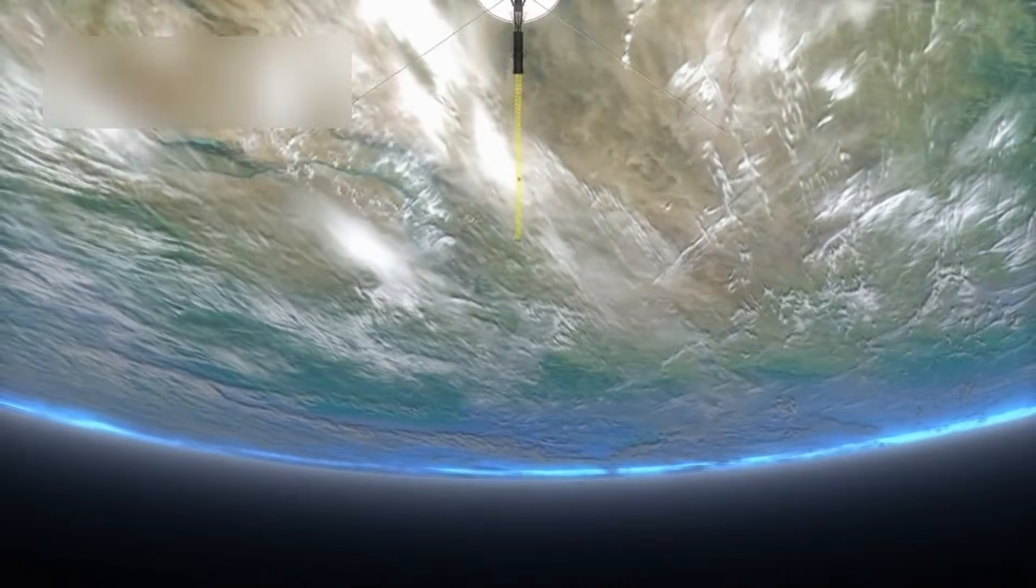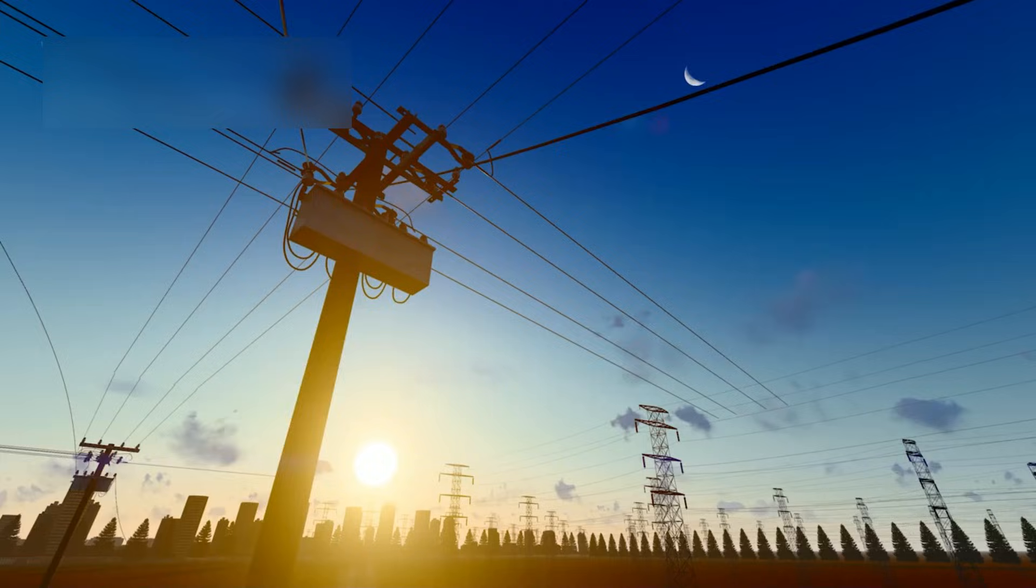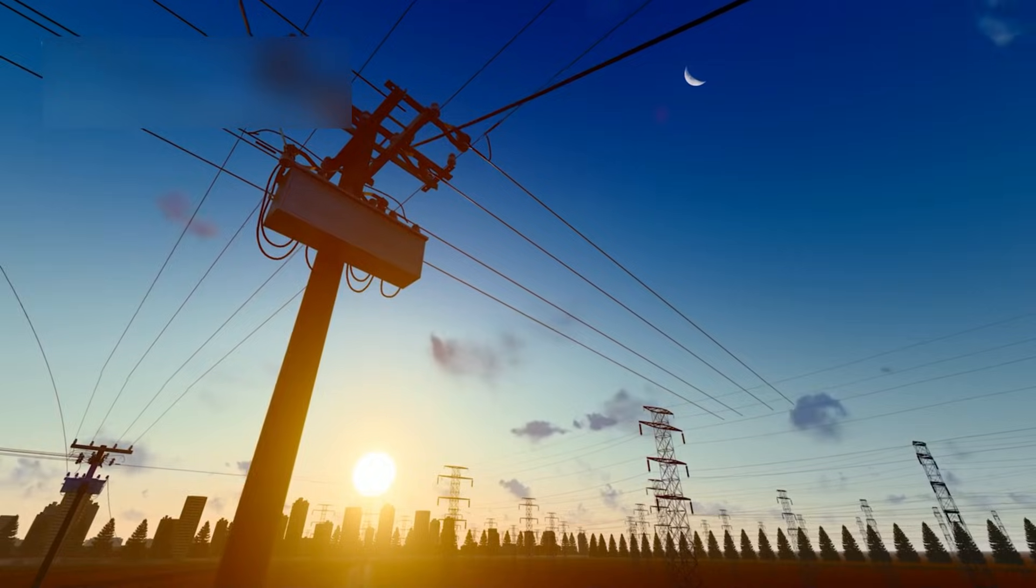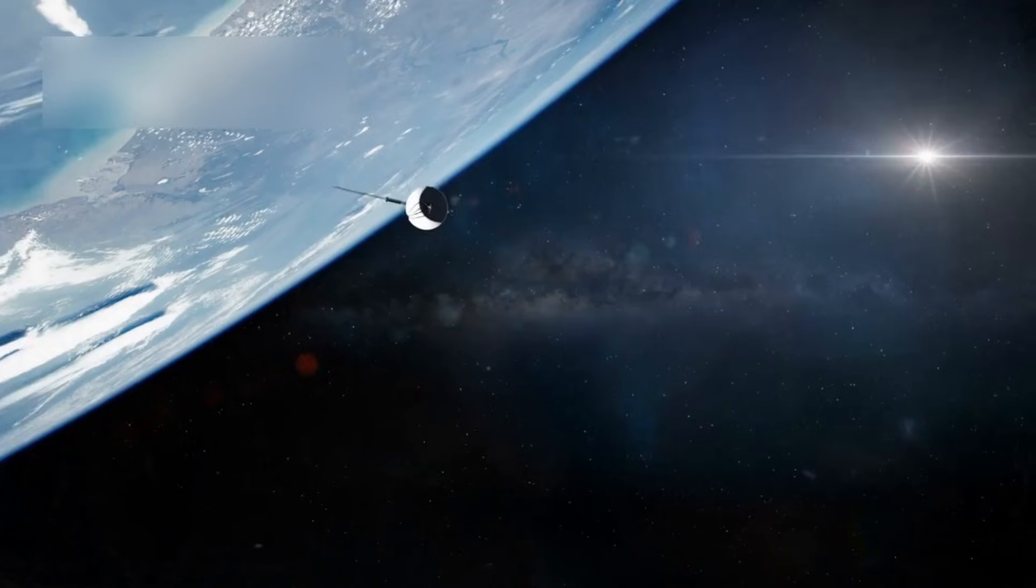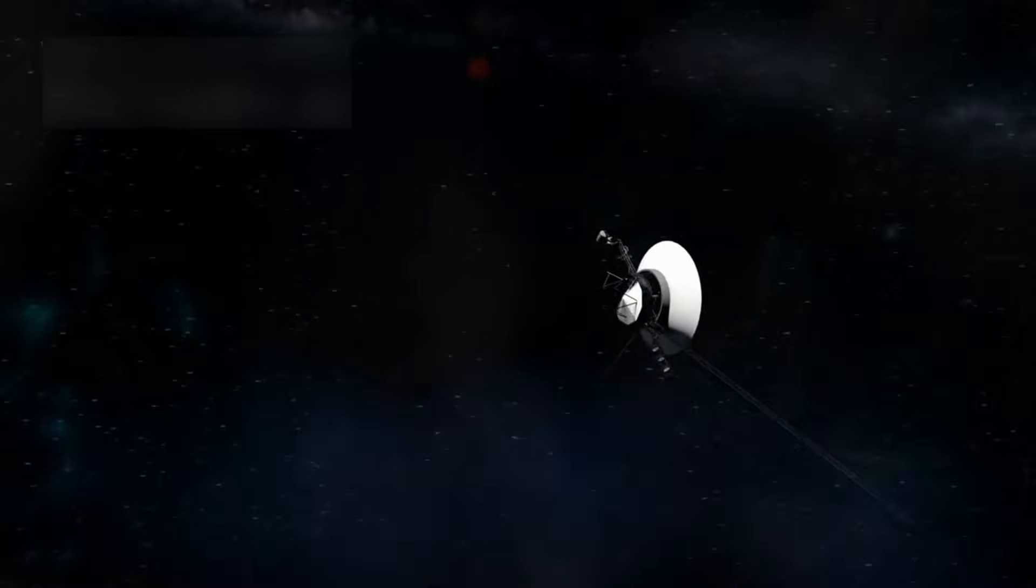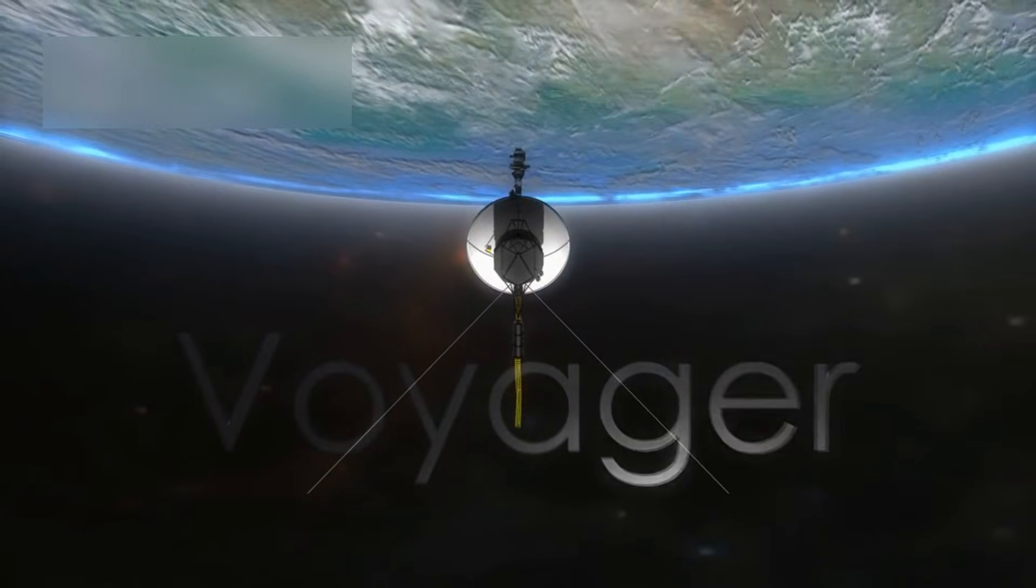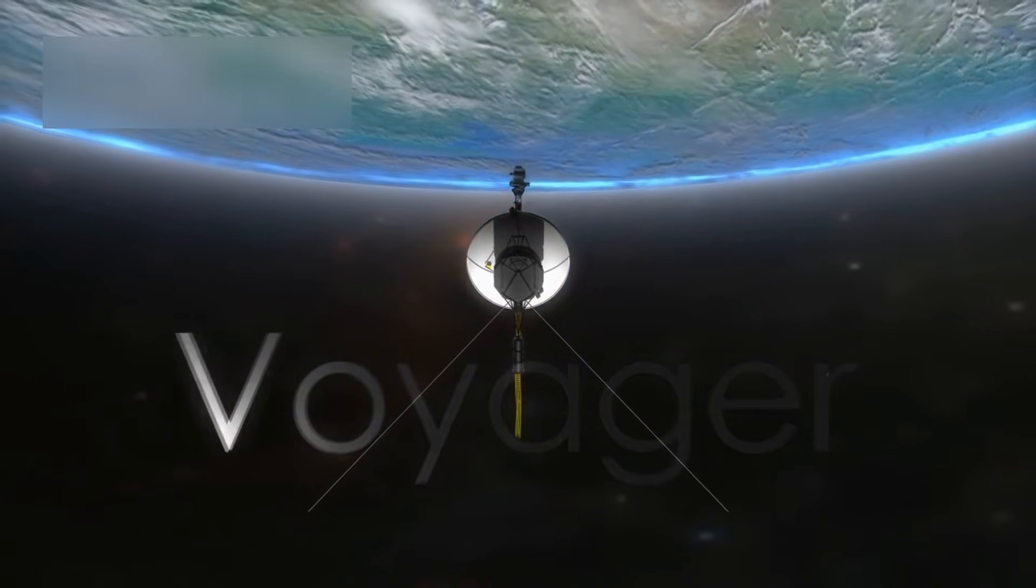The spacecraft continues to face serious challenges. Communication with Earth takes about 19 hours one way, and its power supply is dwindling. To save energy, NASA has had to shut down non-essential systems, leaving only the most critical instruments running. Still, Voyager 1 keeps transmitting valuable data, proving how well it was built.